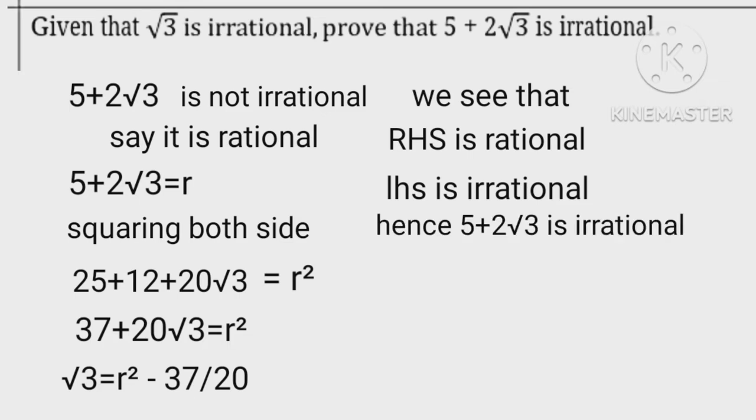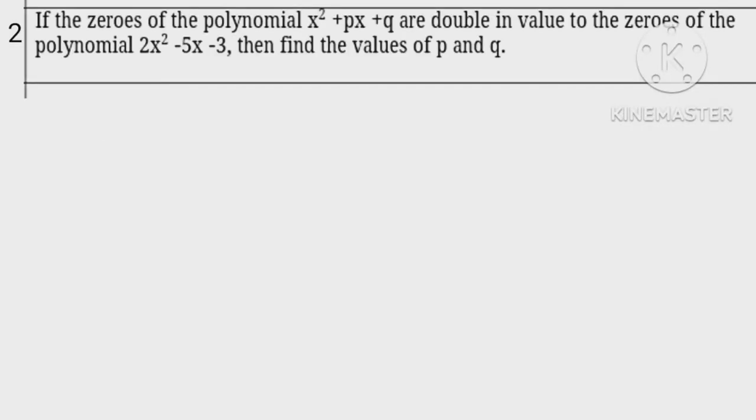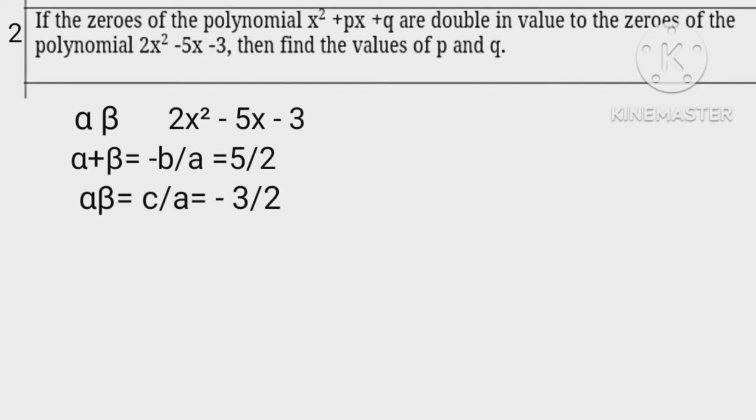Let alpha, beta are two zeros of 2x squared minus 5x minus 3. Then alpha plus beta equals minus b upon a equals 5 upon 2. Alpha beta equals c upon a equals minus 3 upon 2.